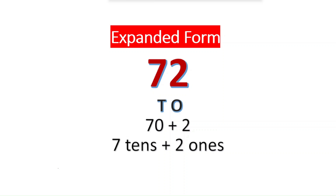Expanded form of 72: 2 is in the 1's place and 7 is in the 10's place. It's nothing but 7 times 10 is 70, and 2 times 1 is 2, so the expanded form is 70 plus 2.